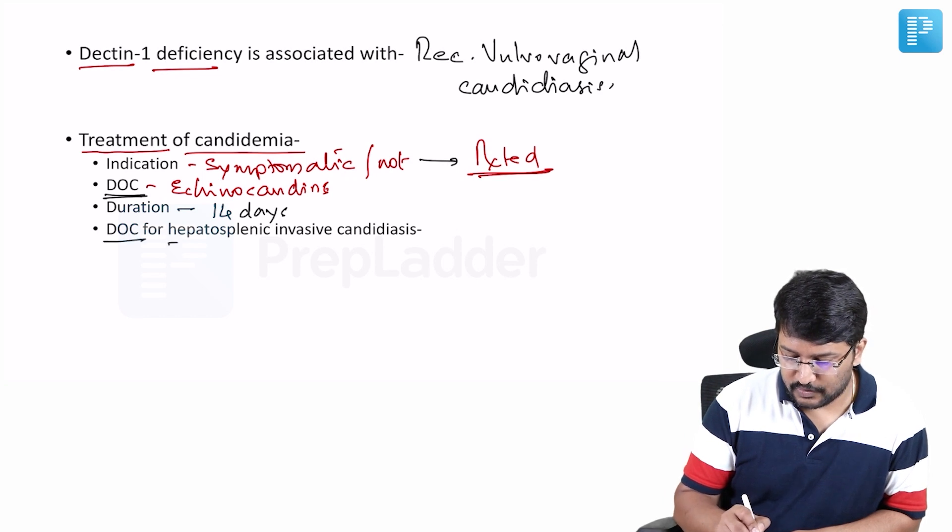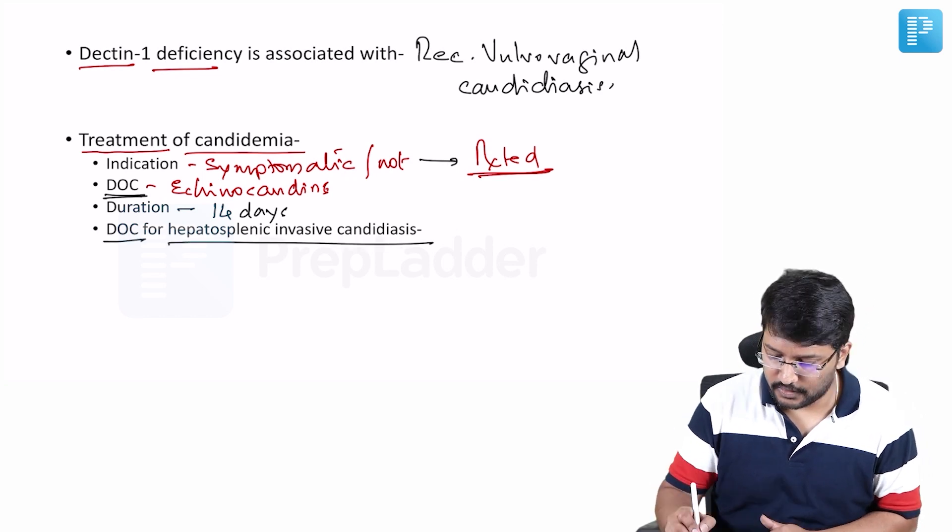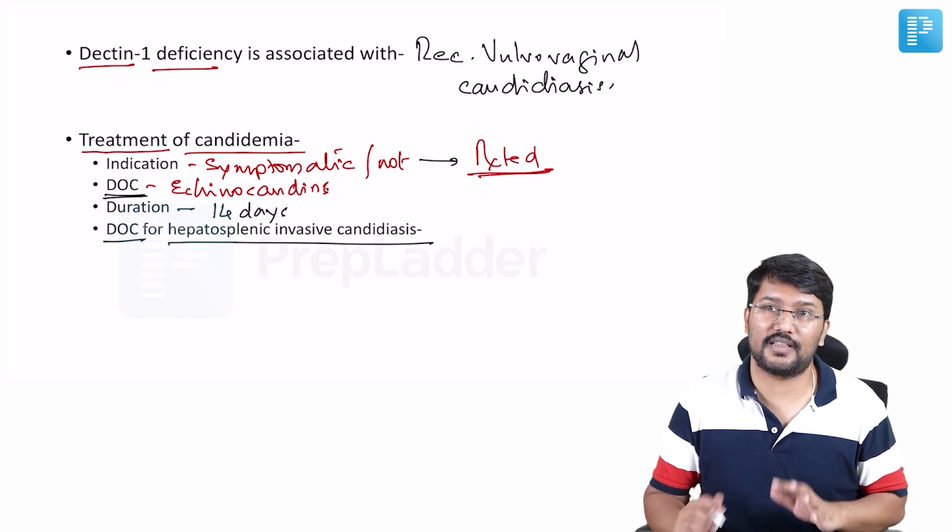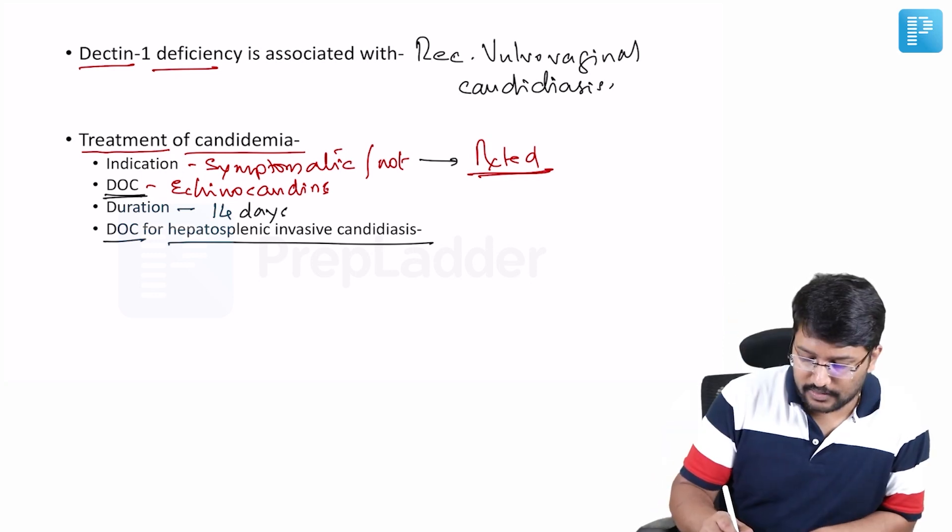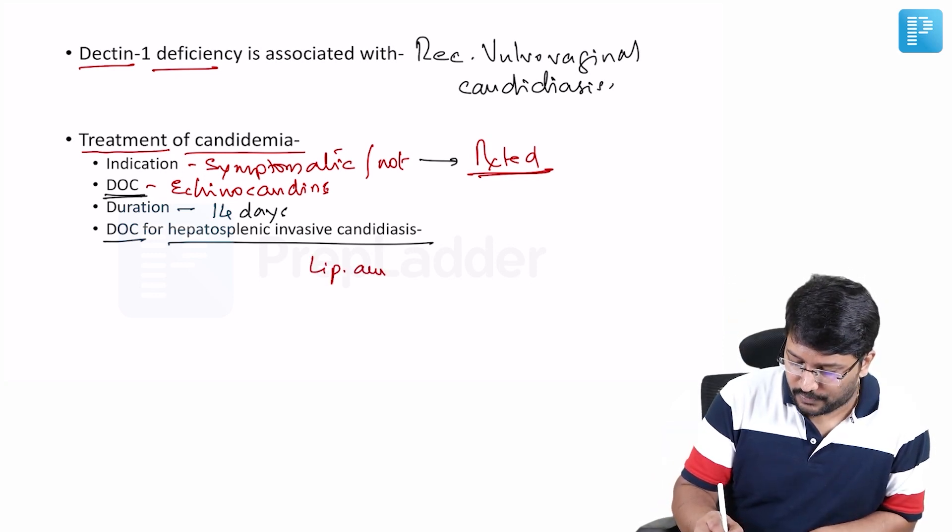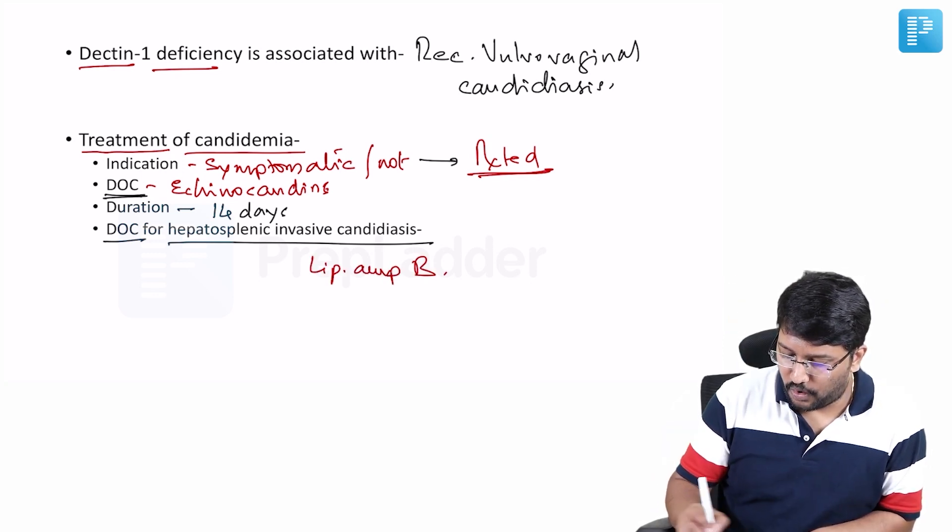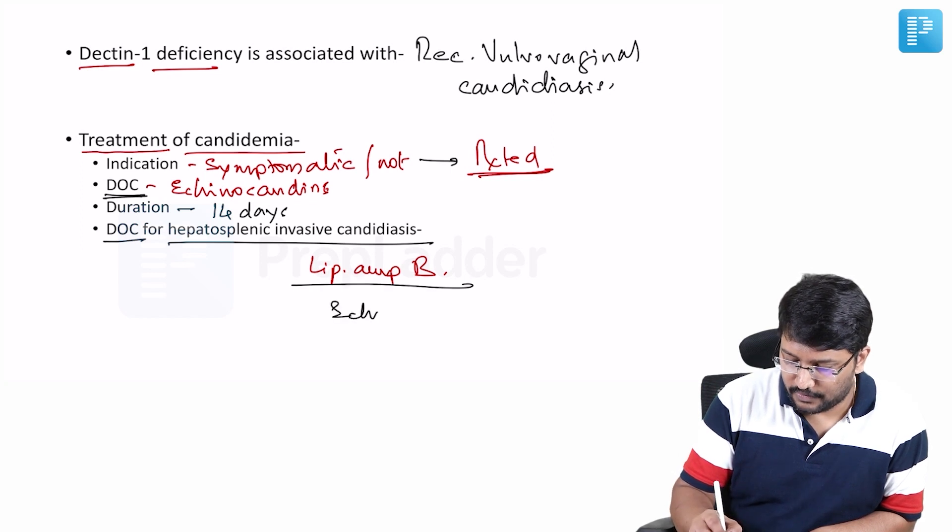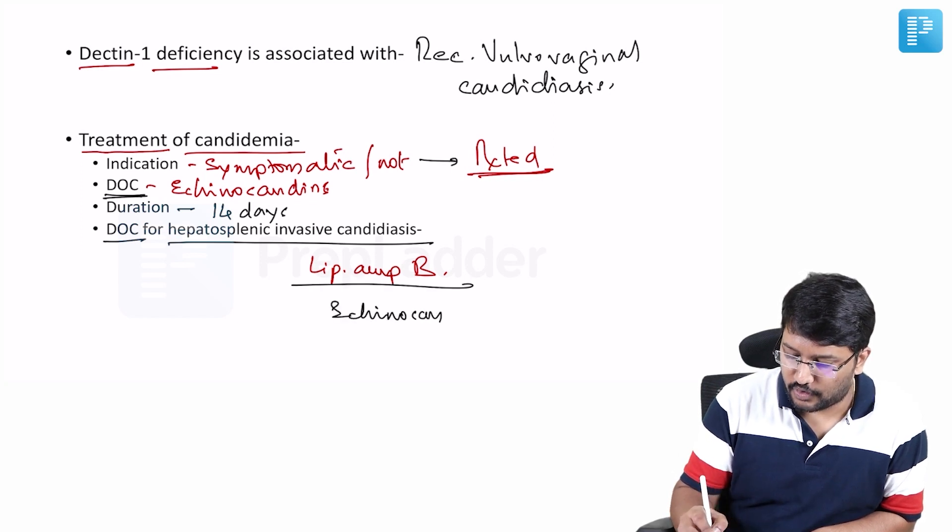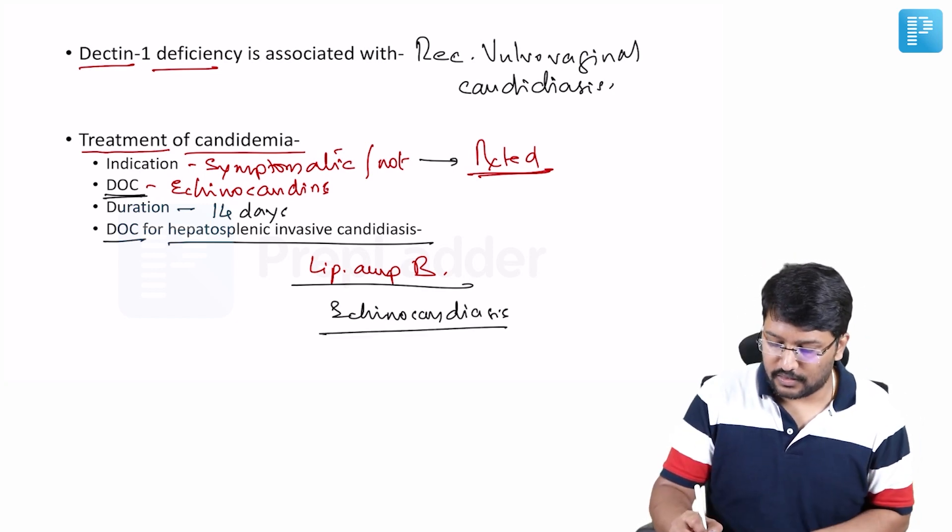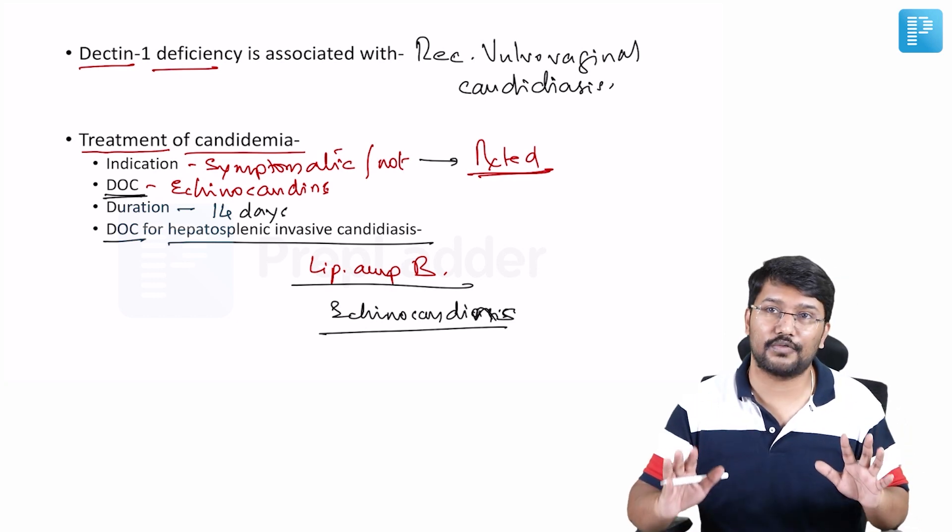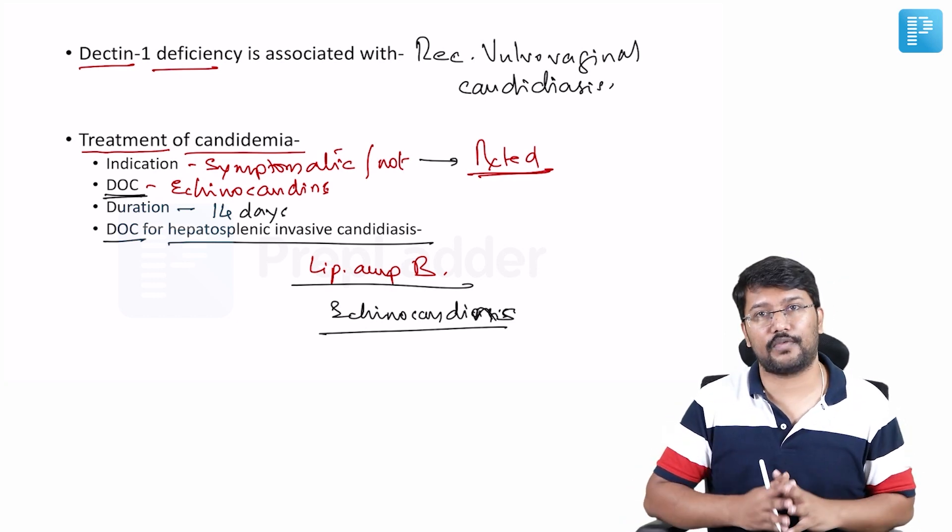Now last point. Drug of choice for hepatosplenic invasive candidiasis. So in case of hepatosplenic invasive candidiasis, apart from the echinocandins you can also consider amphotericin B. So you can consider liposomal amphotericin B or any of the echinocandins. Obviously depending on the liver profile you might need to consider dose adjustment. You might need to consider dose adjustment but otherwise you're free to choose anyone.